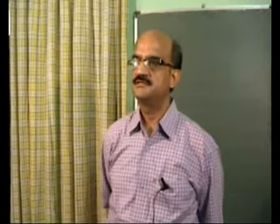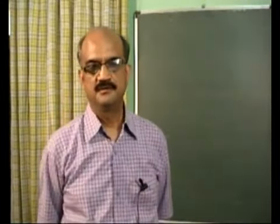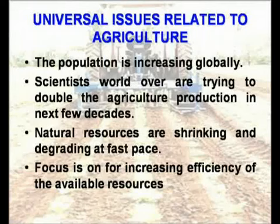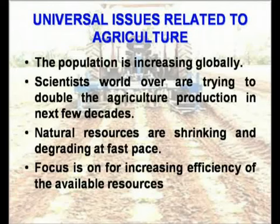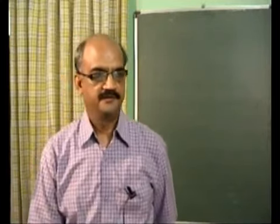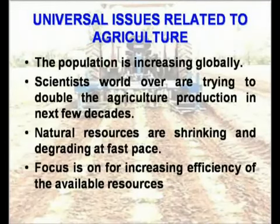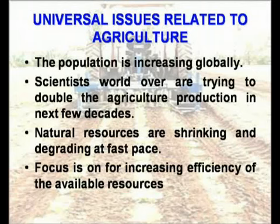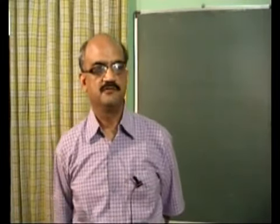Agriculture is the ultimate thing which can bring rural prosperity, as it is the main source of income for rural people. Key issues include growing population — scientists are endeavoring to double agriculture production in a few decades to solve hunger and nutrition problems — and degradation of natural resources at a fast rate. The focus is on increasing efficiency of present resources, since we cannot increase available land or fresh water.